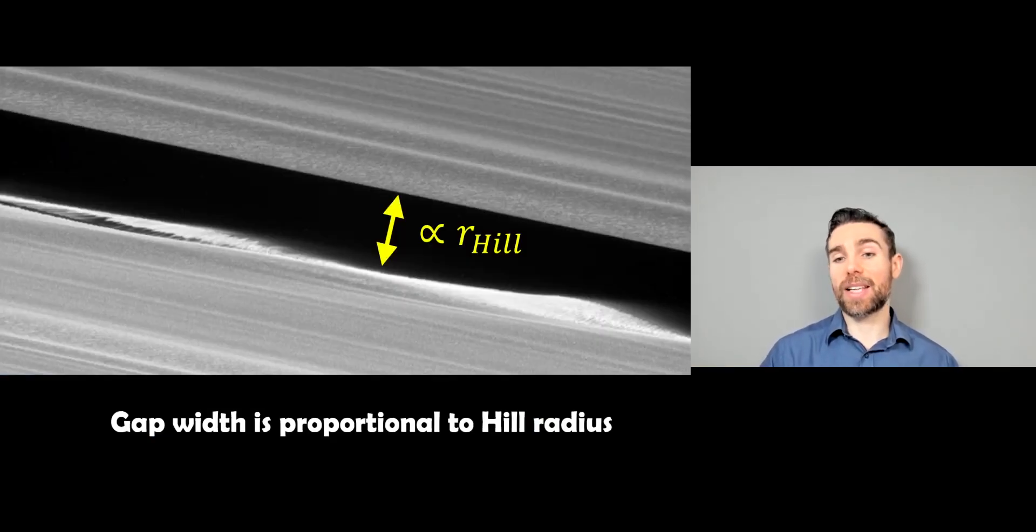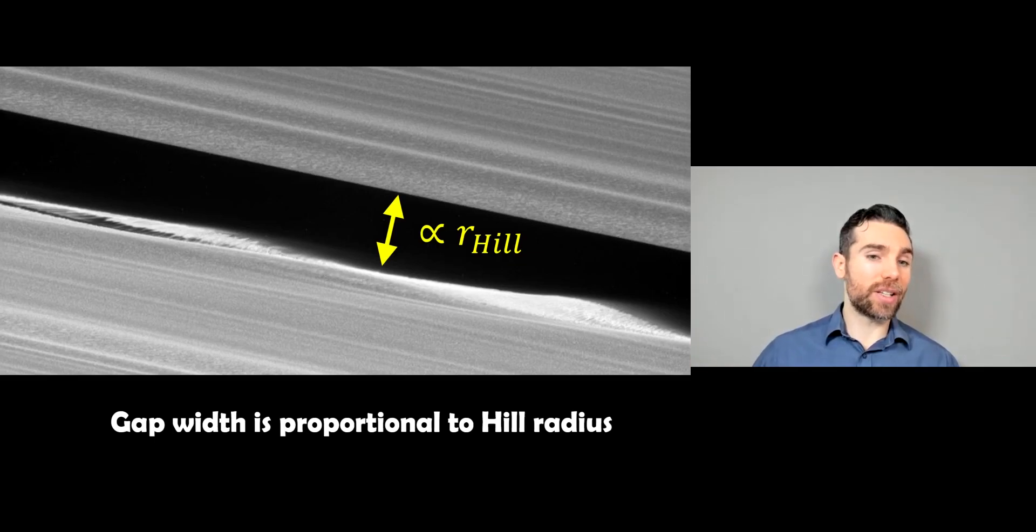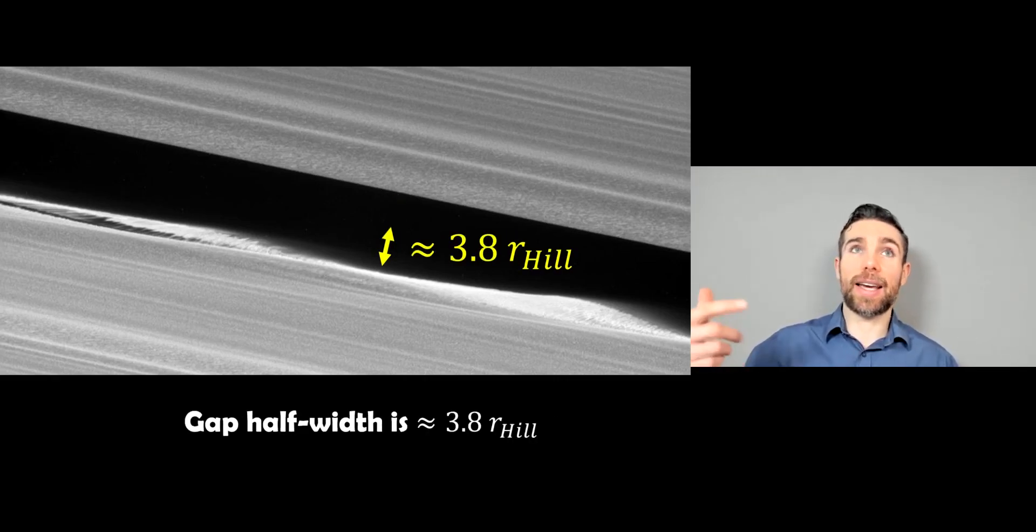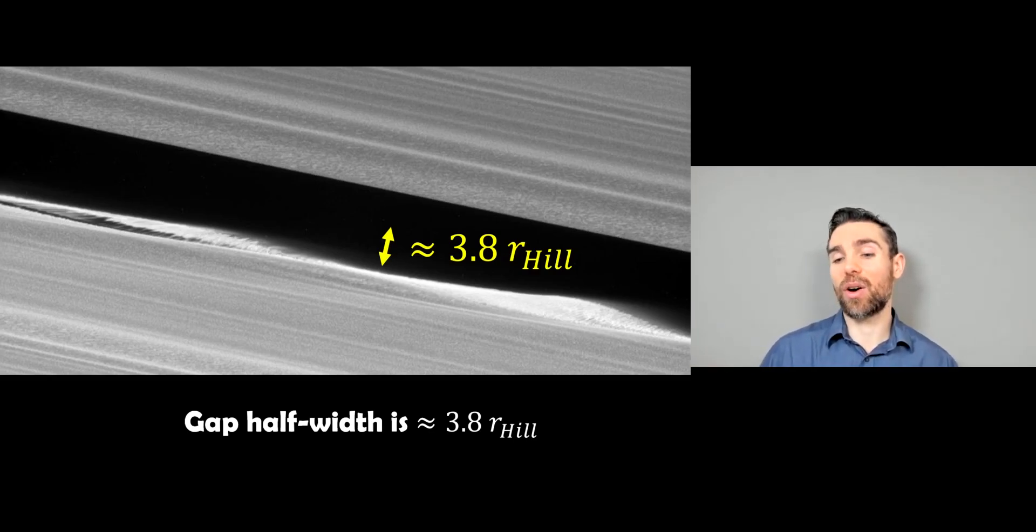So going back to Saturn's rings, the gap width created by one of these moons in the rings itself is proportional to the hill radius. So we've already got an equation for the hill radius. We can measure that gap width. We know that it's going to be proportional to that. And more specifically for Saturn, it actually relates to a gap half width is about 3.8 times the hill radius of the moon in the gap. So we can measure the gap half width. We would know things like the mass of Saturn and the distance where it is. So we can then actually calculate the mass of the moon.